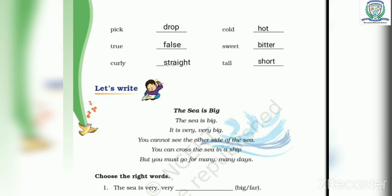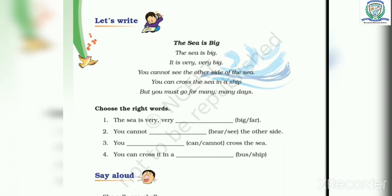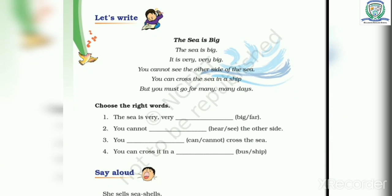Next is let's write. The sea is big. The sea is big. It is very very big. You cannot see the other side of the sea. You can cross the sea in a ship. But you must go for many, many days.